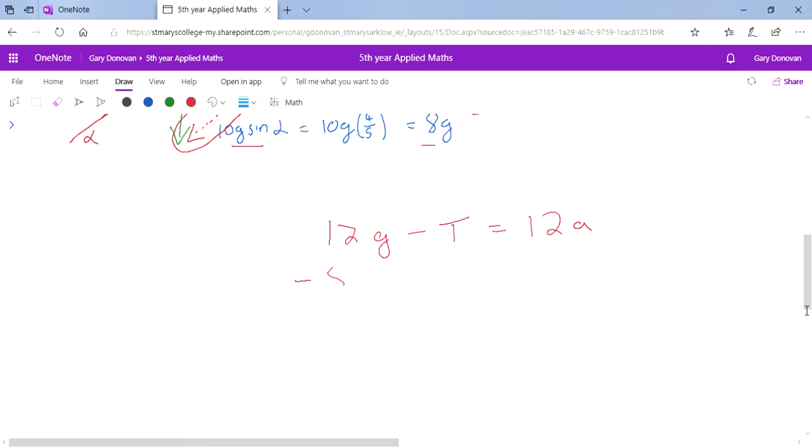Equation 1 was 12g minus t equals 12a. And equation 2 was minus 8g plus t equals 10a. I'm just writing it in a different way, writing the g component first. And I won't do this out fully, I'll let you solve. We solve for t.